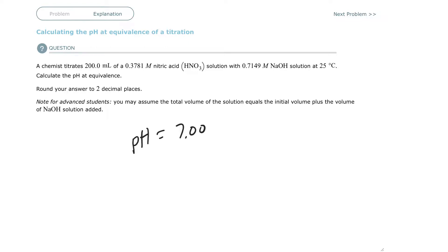If you titrate a weak base, its product is going to be a weak acid. And if you have a weak acid, then it's going to be less than seven.